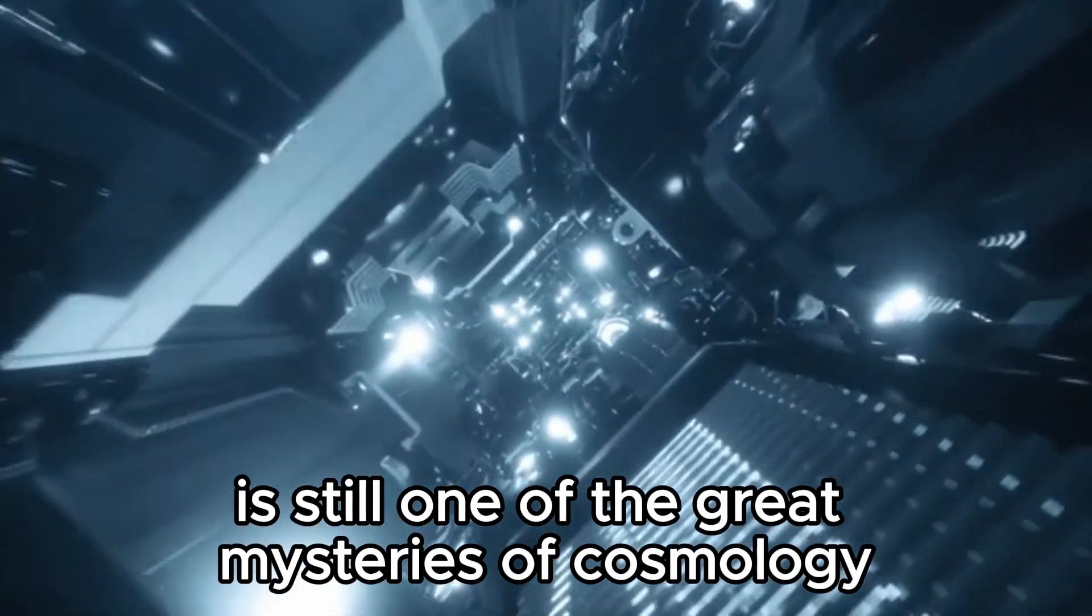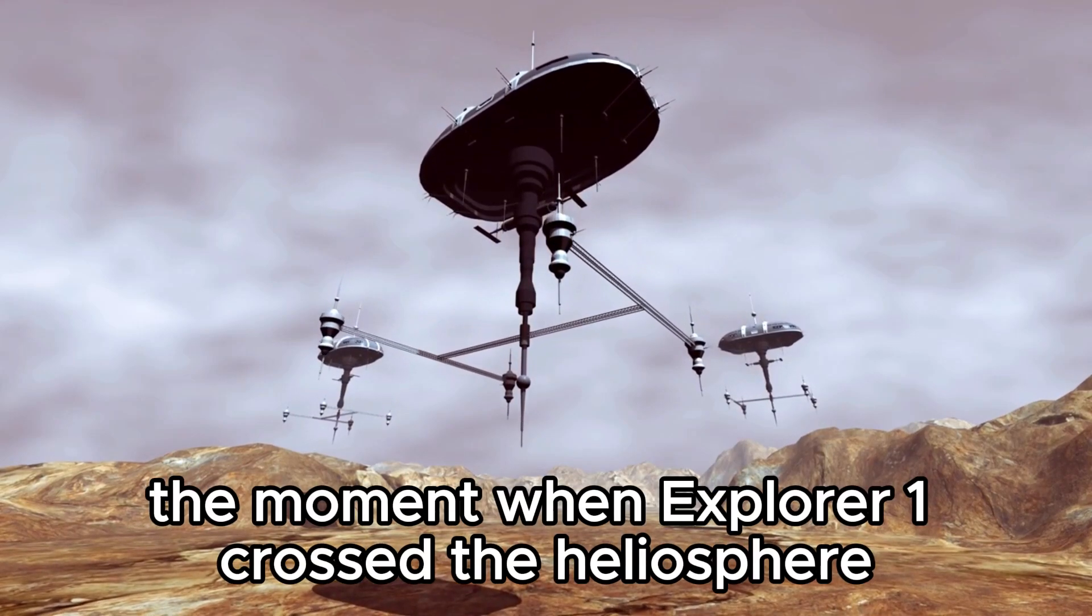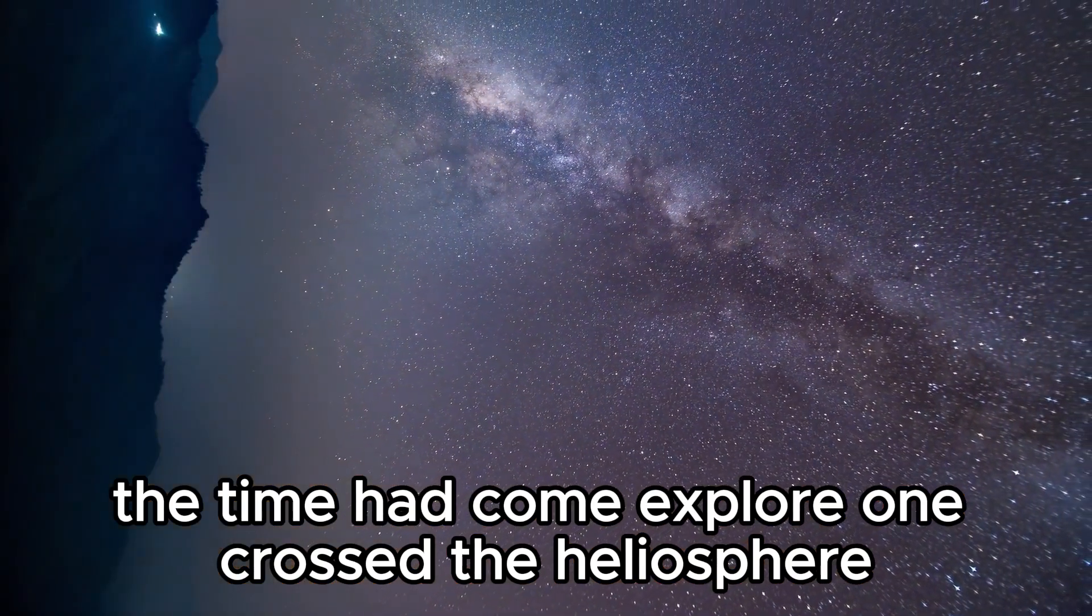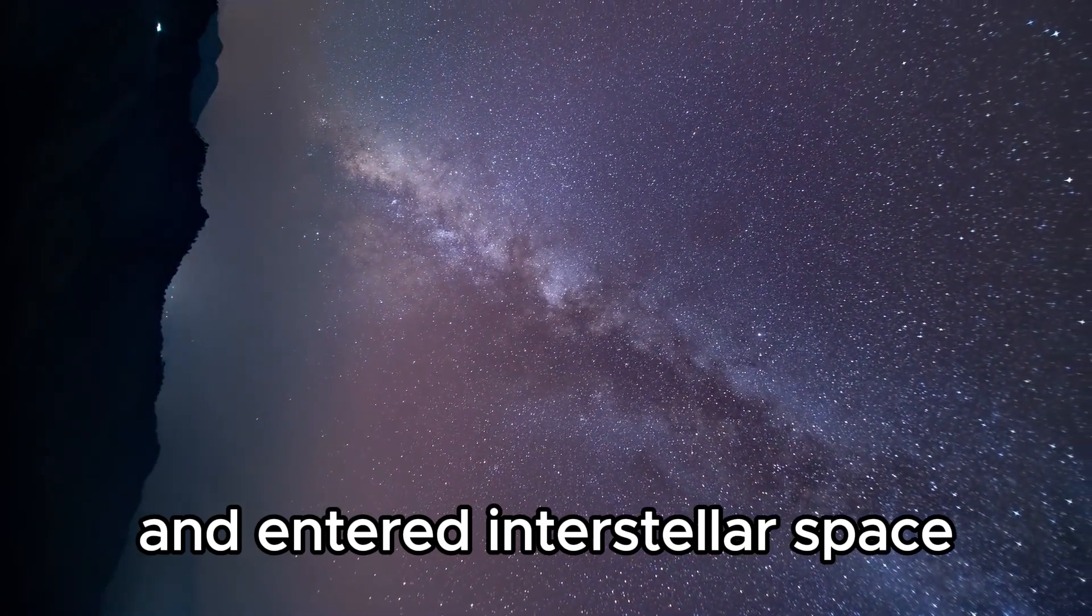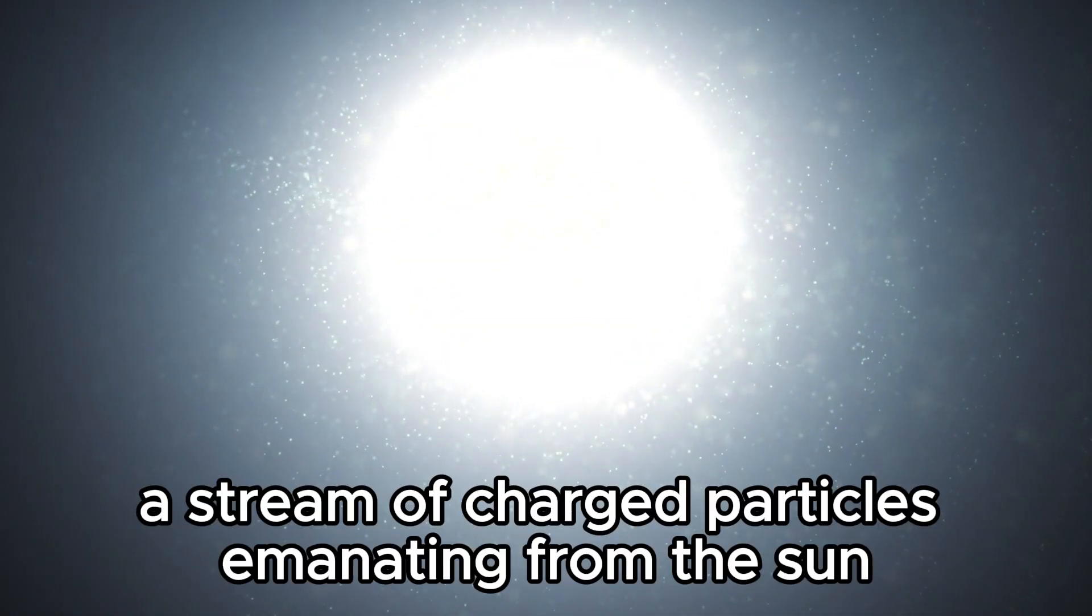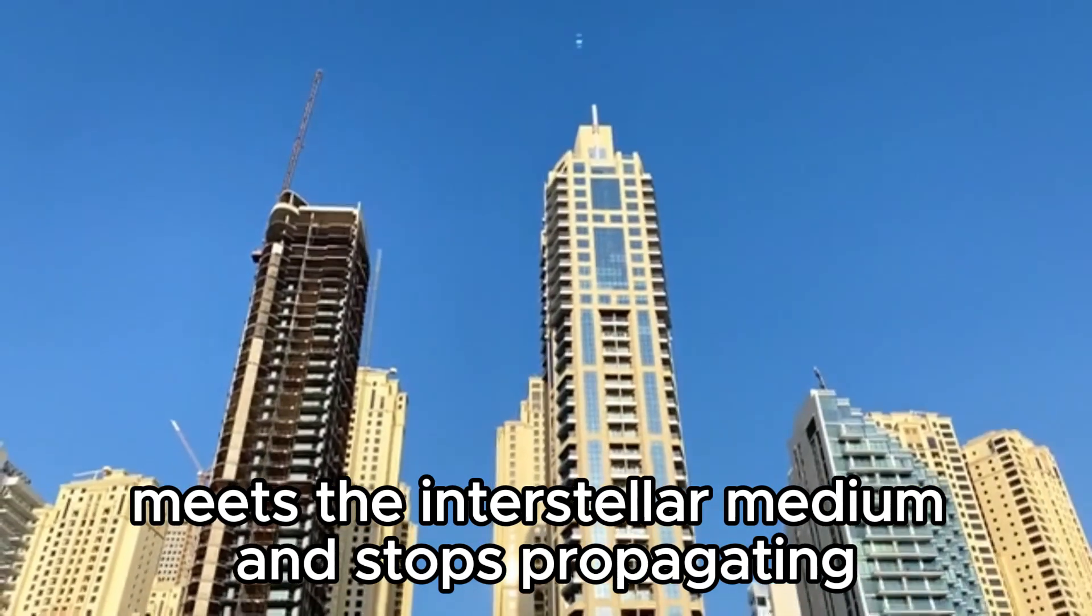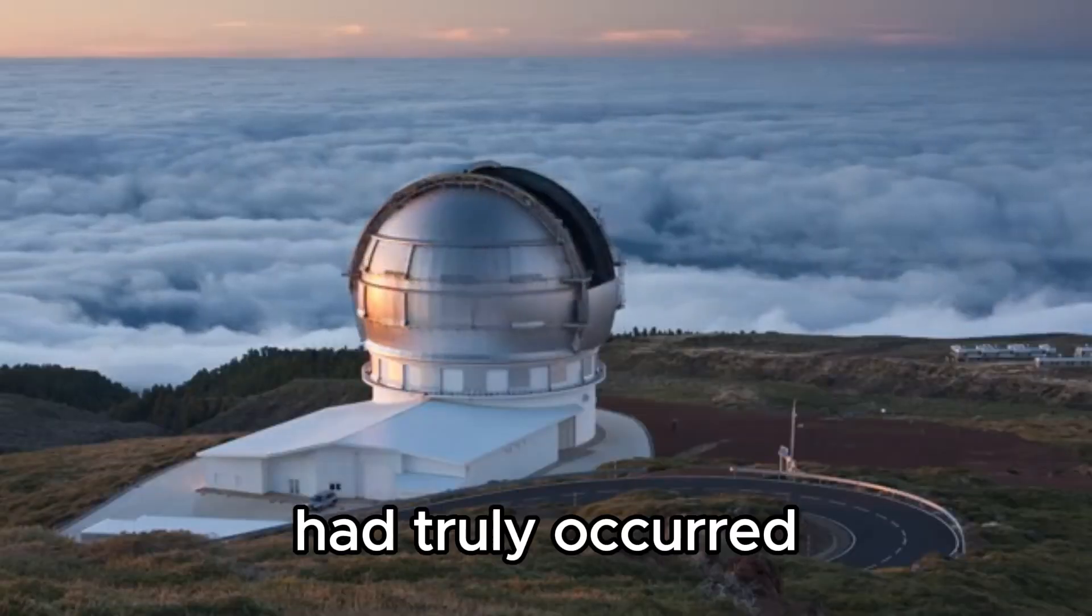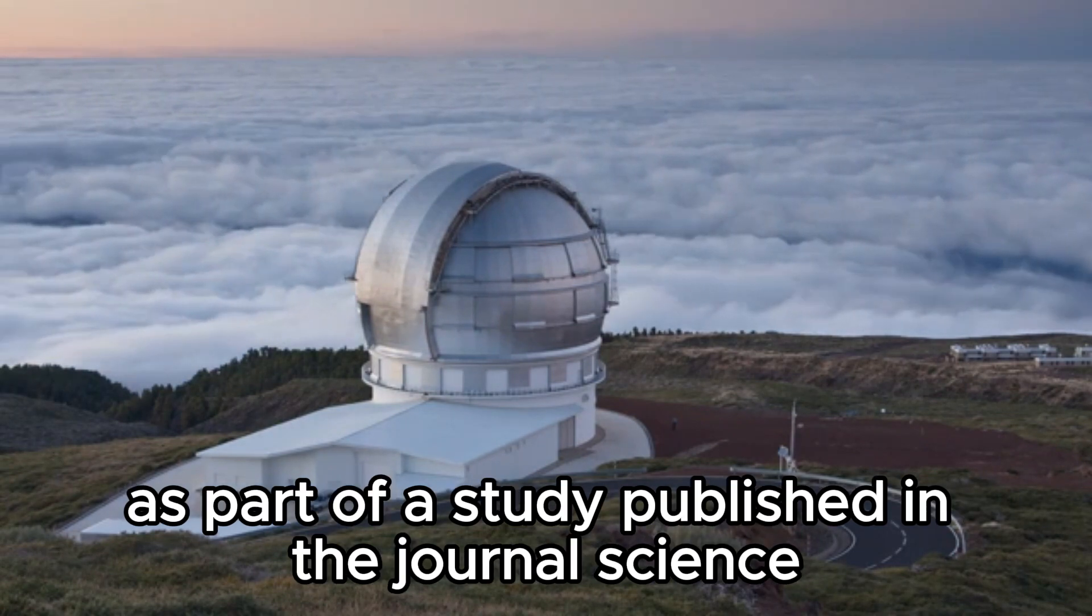So you can imagine the excitement with which researchers anticipated the moment when Explorer 1 crossed the heliosphere. On August 25, 2012, the time had come. Explorer 1 crossed the heliosphere, the farthest edge of the sun's influence, and entered interstellar space. The boundary region is known as the heliopause, and it marks the point where the solar wind, a stream of charged particles emanating from the sun, meets the interstellar medium and stops propagating. It took nearly 12 months for researchers to be certain that the transition to interstellar space had truly occurred. The entry was only confirmed in September 2013 as part of a study published in the journal Science.